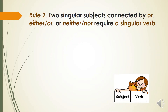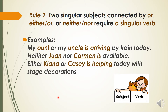But there are some cases that need your attention. The first one: two singular subjects connected by 'or', 'either or', or 'neither nor' require a singular verb. Look at the examples. 'My aunt or my uncle is arriving by train today.' There are two subjects in this sentence — my aunt and my uncle. They are singular subjects connected by 'or', so these subjects require a singular verb: 'is arriving.'